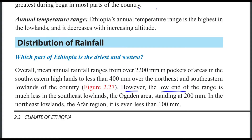However, in the upper left-hand region, the range is much less. In the Southeast Lowland, the Ogaden area, rainfall stands at around 200 mm. In the Northeast Lowland, the region receives even less than 100 mm.